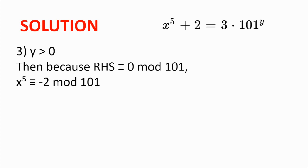Now we notice that 101 is prime. And by Fermat's Little Theorem, x to the power of 100 must be congruent to 1 modulo 101. Let's see if this checks out with x to the power of 5 being congruent to minus 2 modulo 101.